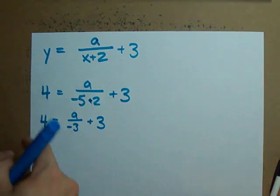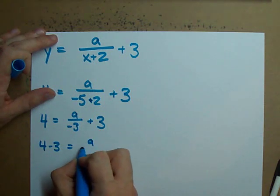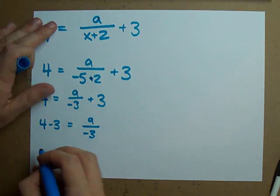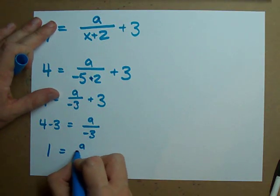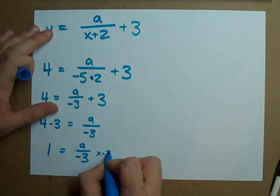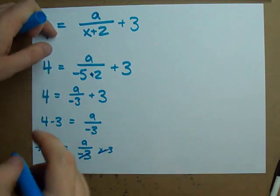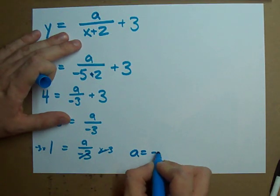I'm going to move that 3 all the way over. 4 minus 3 equals a divided by negative 3. 4 minus 3 is 1 of course. How do we undo division by negative 3? By multiplying both sides by negative 3. And so a turns out to be negative 3.